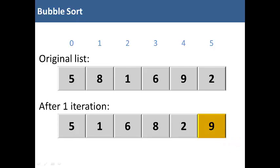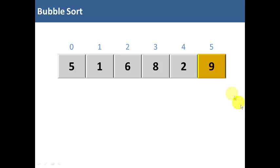So let's look at the next iteration. We'll leave nine highlighted in gold because it's already been sorted. We're only going to look at items zero through four for the second iteration, which are unsorted.